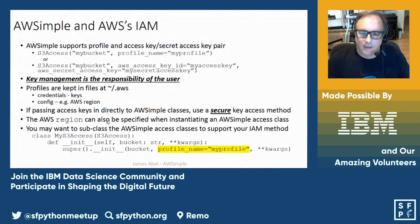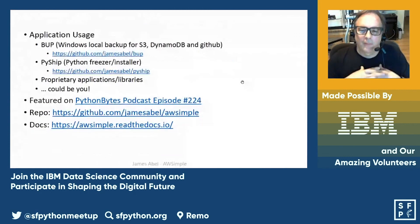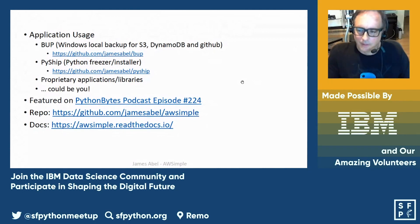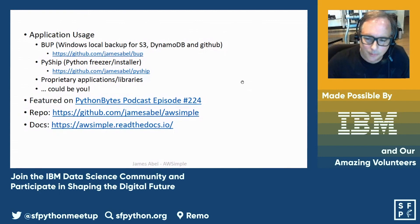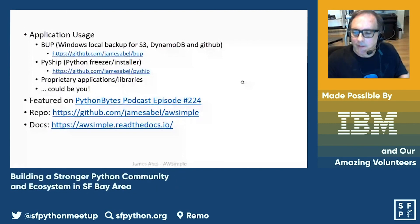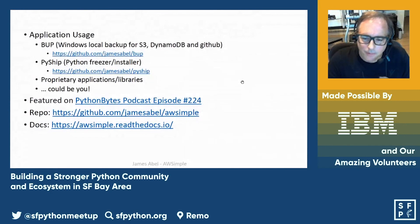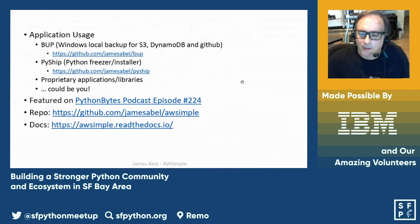I've used AWSimple in my own open-source backup program, which is a Windows local backup for S3, DynamoDB, and GitHub — though AWSimple itself doesn't work with GitHub. I've also used it in PyShip, which is a Python freezer installer, and in proprietary applications and libraries. Hopefully other people will find uses for AWSimple. It was also featured on Python Bytes podcast number 224 — thanks to Michael Kennedy for that feature. It's open source, and there's the URL for the repo and the documentation. Thank you.